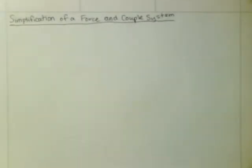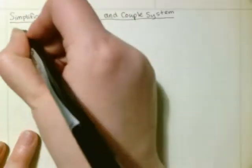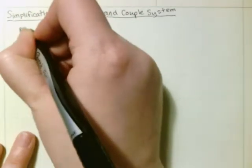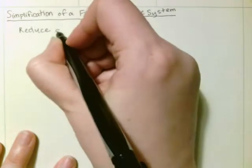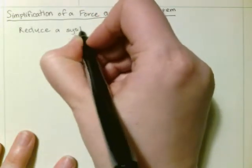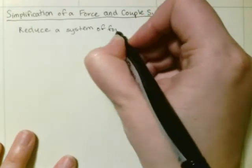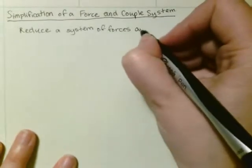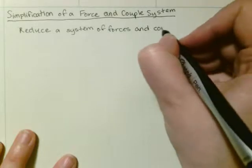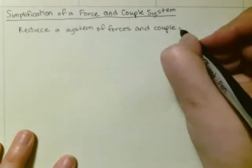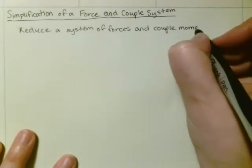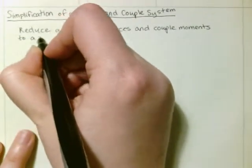We're going to discuss simplification of a force and couple system. You can reduce a system of forces and couple moments to a simpler form by replacing it with an equivalent system.